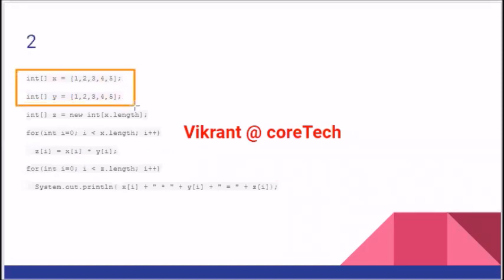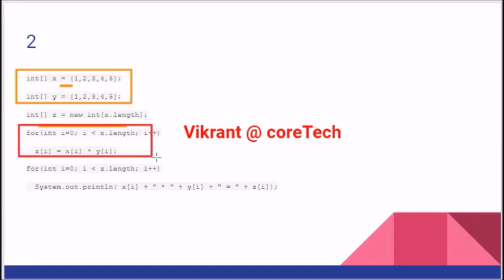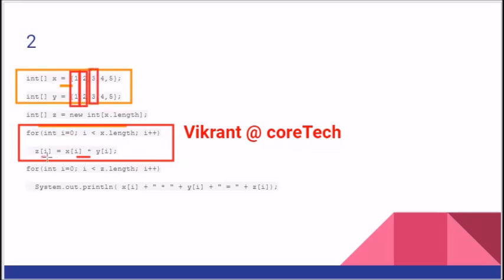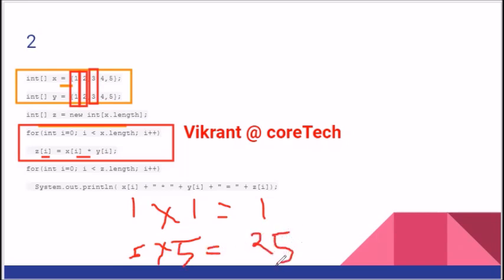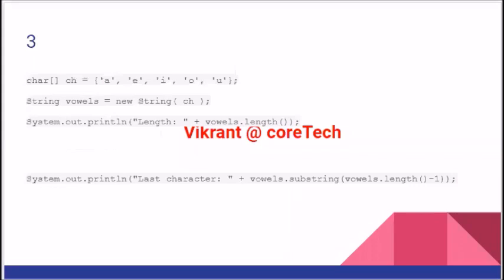We have two integer arrays named X and Y, creating another array named Z of the length of X. This loop is storing the value of 1 into 1, likewise 2 into 2, likewise 3 into 3 in an array called Z. So this should give something like 1 into 1 equals 1, and likewise 5 into 5 equals 25. You can keep giving answers in the chat box and match your score later with the answers provided in the video.